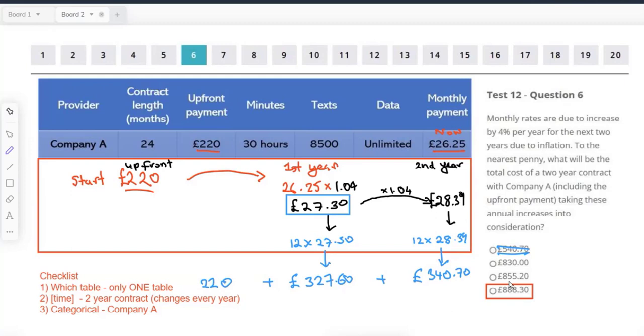You don't have to be super accurate because the answers are not that close to each other, right? Very basic addition of the 220, the 327, the 340 gets you something that is much closer to 888 than it is to 855. Unless it's like 888.30 and 888.42 or something, then of course, yes, I would have to add up all the pennies as well. But no, don't have to. Is that okay?